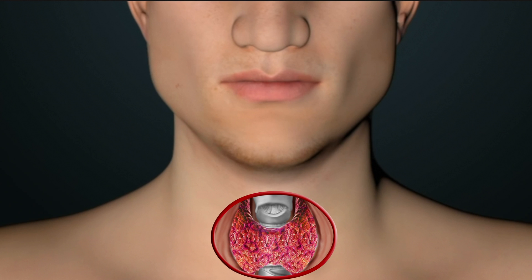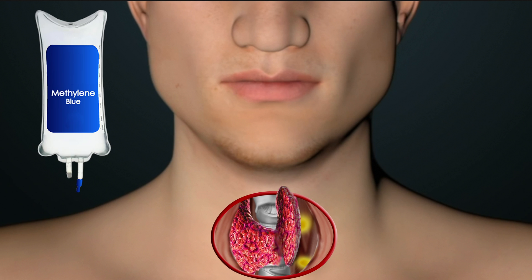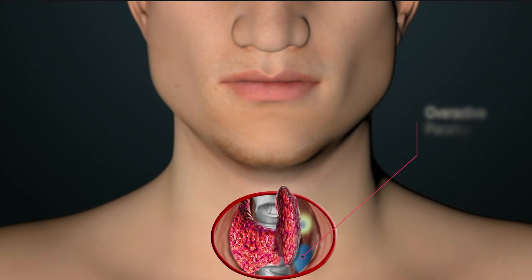One side of the thyroid gland is mobilized to allow visualization of the glands. Sometimes, methylene blue is given in the IV to help the surgeon identify the parathyroid glands, which absorb more of the blue dye than other tissues.